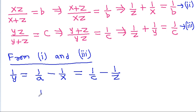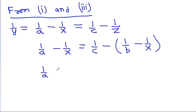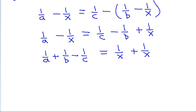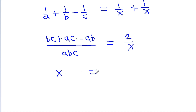So we get 1 by a minus 1 by x is equal to 1 by c minus 1 by z, and 1 by z is 1 by b minus 1 by x. And it is 1 by a minus 1 by x is equal to 1 by c minus 1 by b minus 1 by x plus 1 by x, and here taking abc as LCM, we get bc plus ac minus ab all over abc is equal to 2 by x.